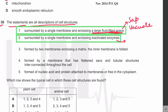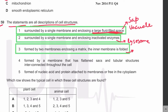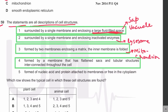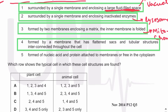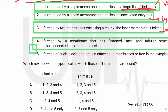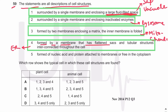The third description — formed by two membranes enclosing a matrix, with the inner membrane folded — matches the mitochondrion. The fourth description — formed by a membrane with flattened sacs and tubular structures interconnected throughout the cell — is the endoplasmic reticulum, because interconnected flattened cisternae forming tubular structures throughout the cell describes the ER.